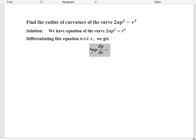So, 2ρ into 2a, that is 4aρ(dρ/dr). Then on the right-hand side, we have r³. The derivative of r³ with respect to r is 3r².